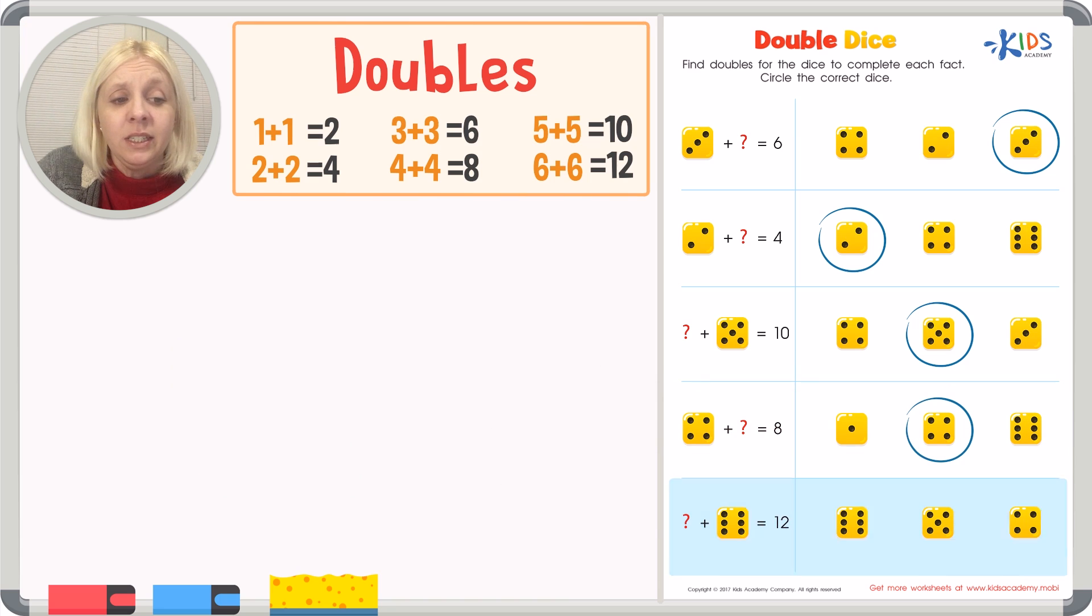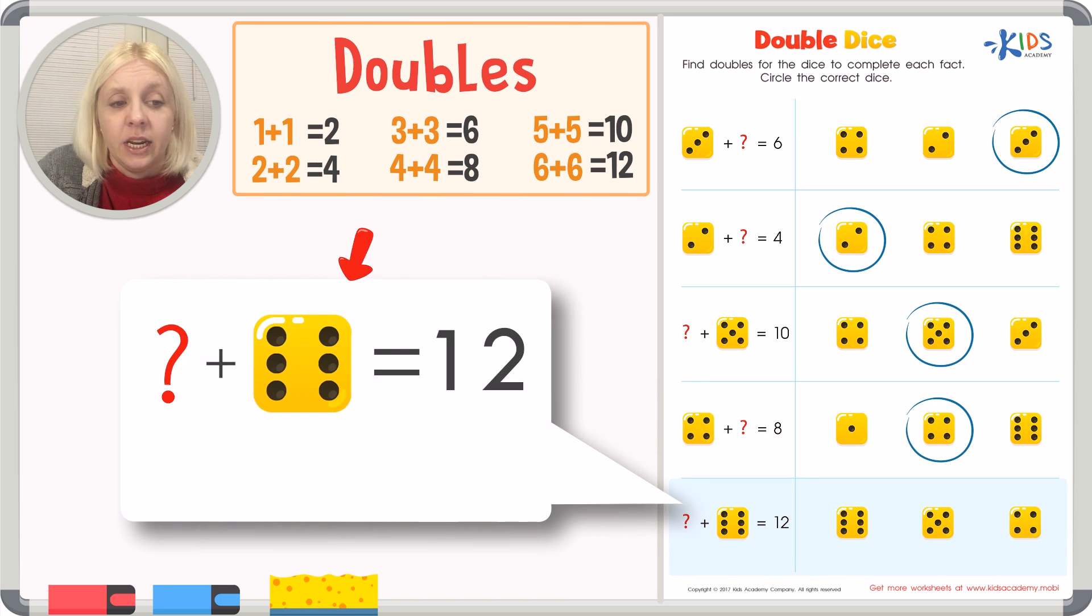The last one is something plus six equals twelve. We're looking for the double, which is the six. We know it's going to be six because we know six plus six is a double, right? Six plus six. Let's come over here and circle the six. We've got six, five, and four. So right here is our answer, six.